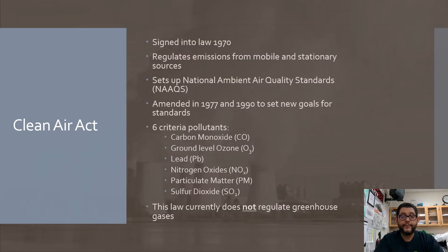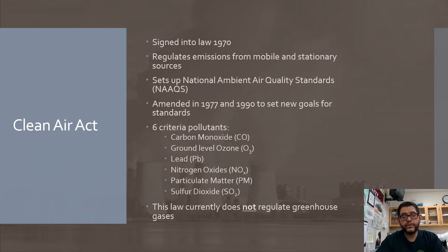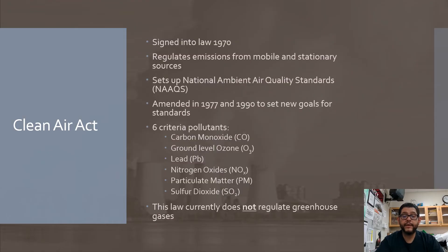The first one is the Clean Air Act. This one was signed into law in 1970. It has to do with air pollution — it sets up air quality standards so that anything going out into the atmosphere is monitored. The original six criteria pollutants are carbon monoxide, ozone at the ground level, lead, NOx chemicals, particulate matter, and sulfur oxides, mainly SO2. One thing to note: this is not a greenhouse gas law. It sets up the EPA to monitor these pollutants and make sure companies and municipalities are lowering their air pollution output, but it does not regulate CO2, methane, or things like that.